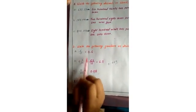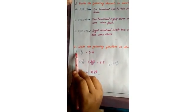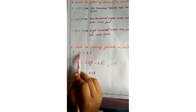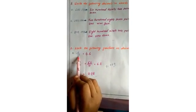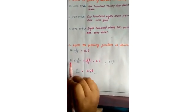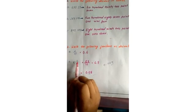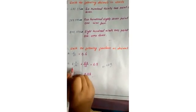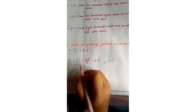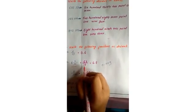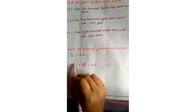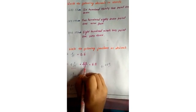Question two: write the following fractions as decimals. For 6/10: number of zeros is one, so it will be 0.6. For the mixed fraction 6 and 3/10: first convert to improper fraction — 6 times 10 is 60, plus 3 gives 63/10. Number of zeros is one, so we get 6.3.